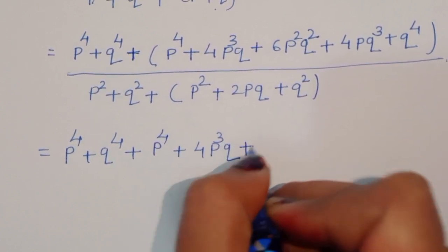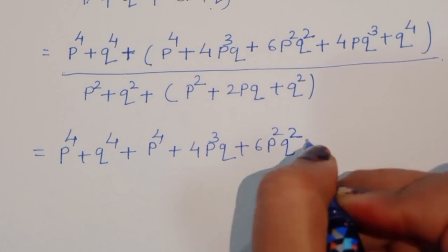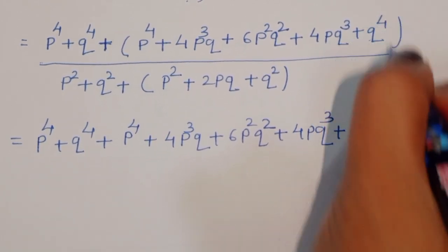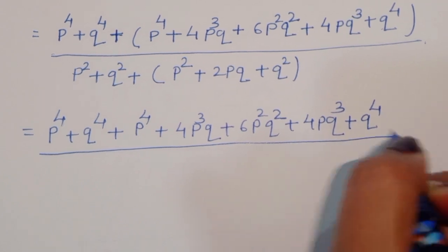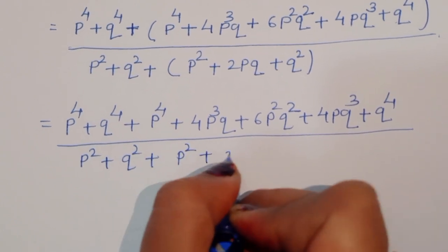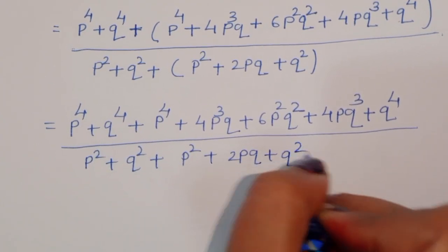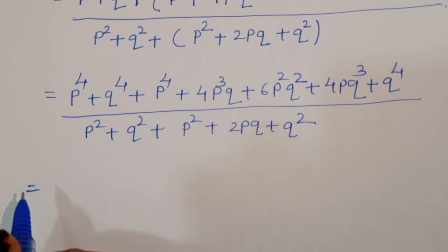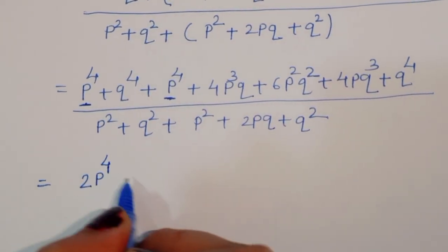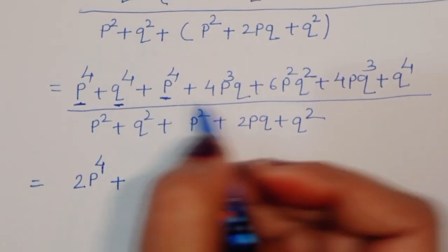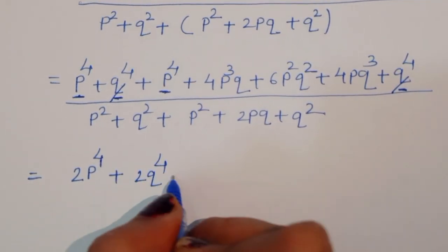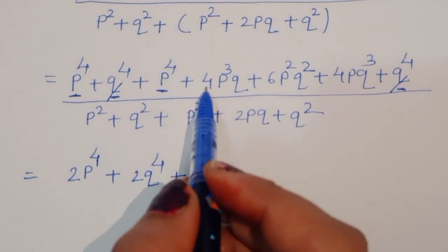So we have P⁴ plus Q⁴ in the numerator. Collecting terms: 2P⁴ plus 2Q⁴ plus 6P²Q² plus 4PQ³, divided by P² plus Q² plus 2PQ plus Q².